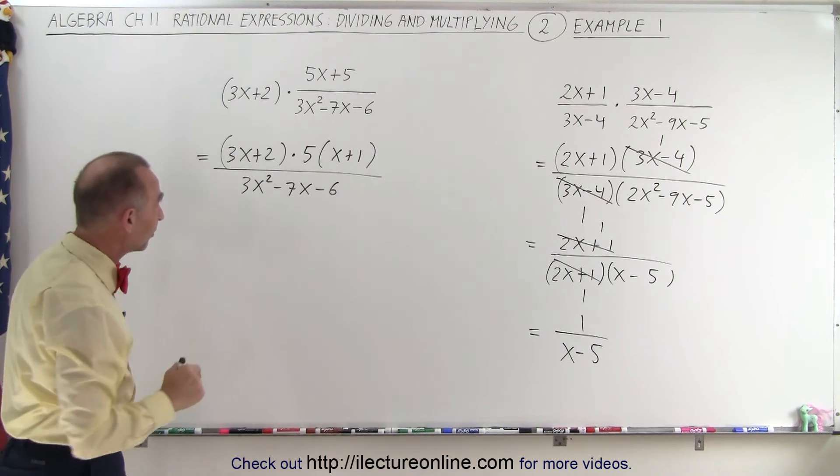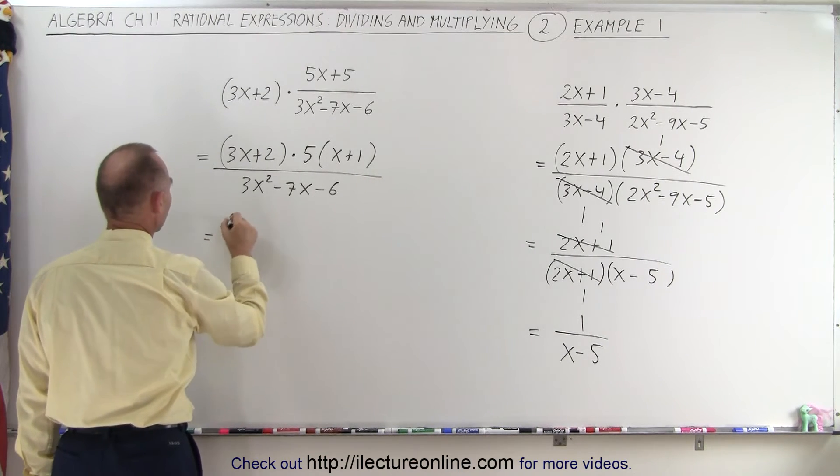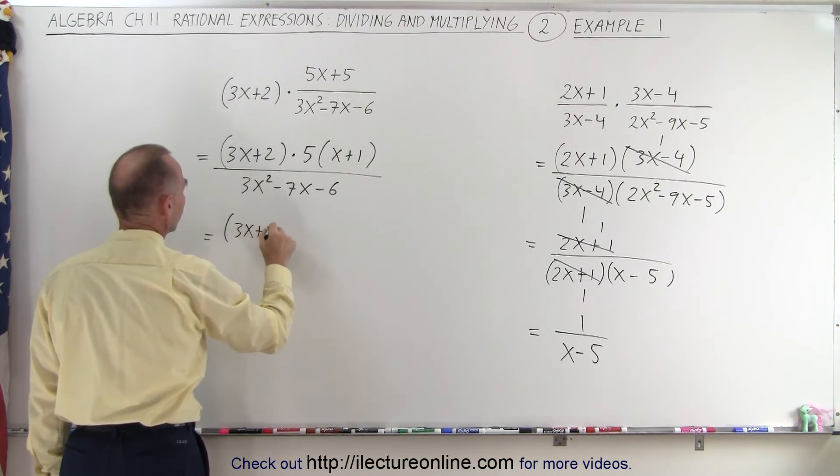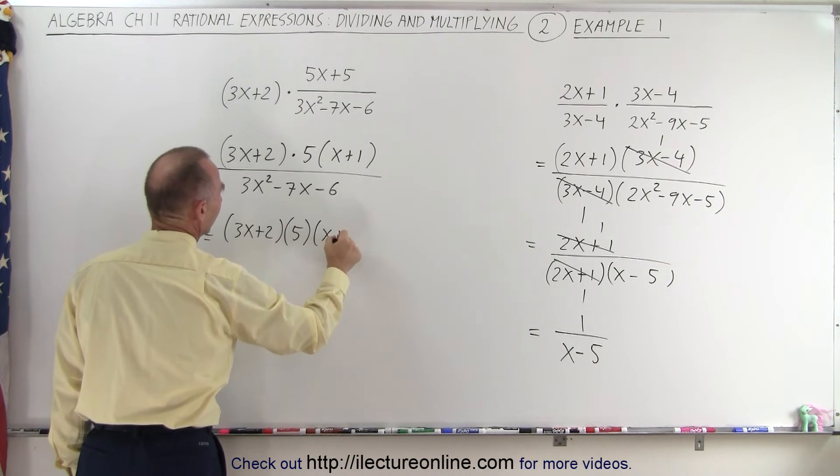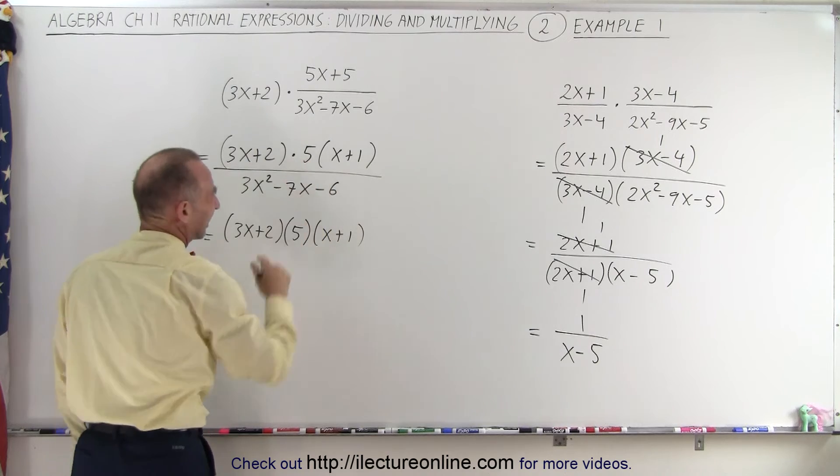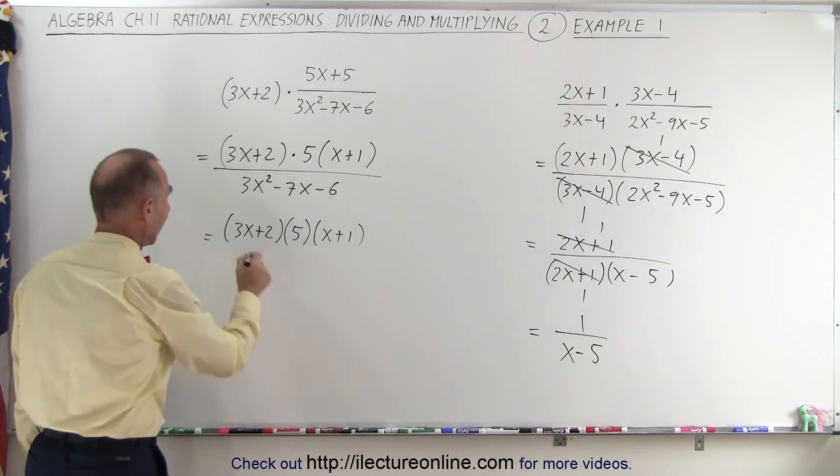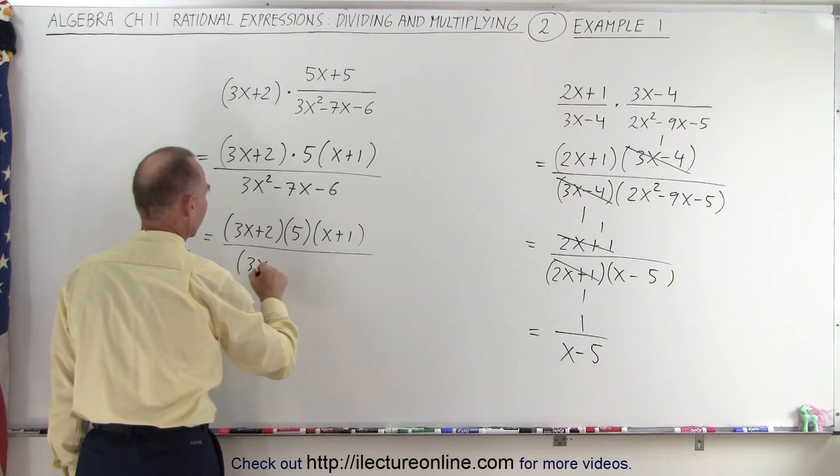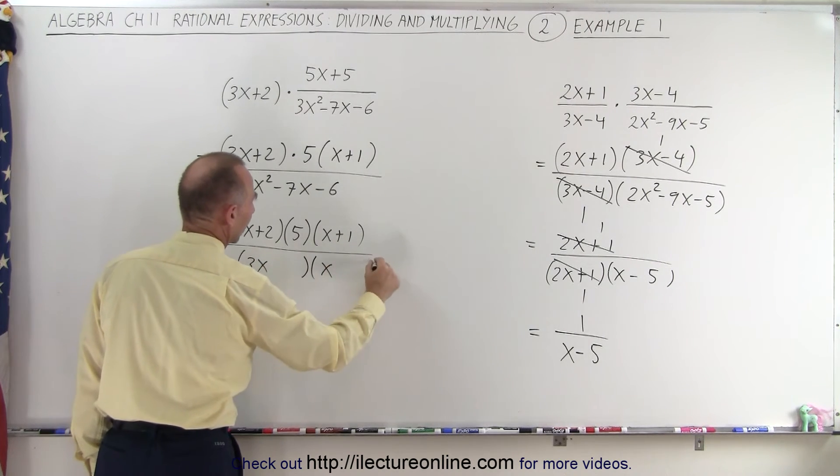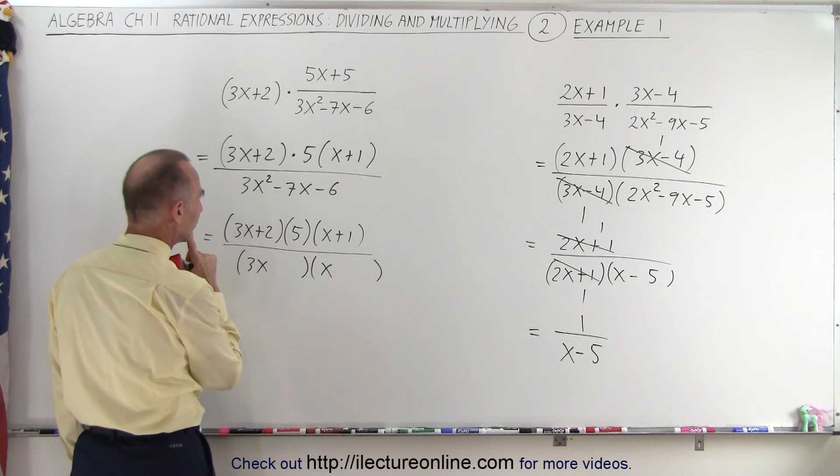Now, I bet I can factor that denominator. Let's see what that looks like. So 3x plus 2 times 5 times x plus 1. You can write it like this, you can write it like that. It doesn't make any difference. And then the denominator, let's see here. Let's try a 3x and an x. The signs are plus and minus.